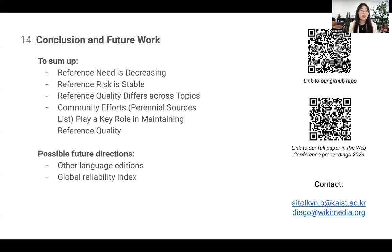To sum up: Reference Need is decreasing and Reference Risk is remaining stably low. Reference Quality does differ by topics, and community efforts — such as the creation of the Perennial Sources List — play a key role in maintaining Reference Quality on Wikipedia.